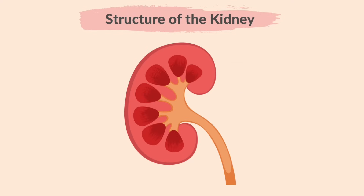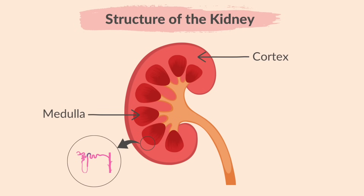You should also know the structure of a human kidney. This is the cortex, and this is the medulla. Each kidney contains around a million tiny structures called nephrons. Nephrons are located between the cortex and medulla, and this is where urine is produced.